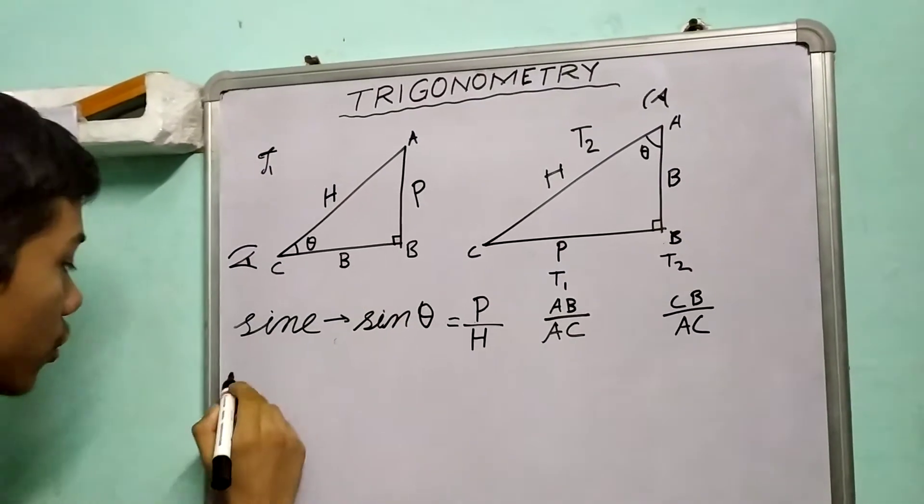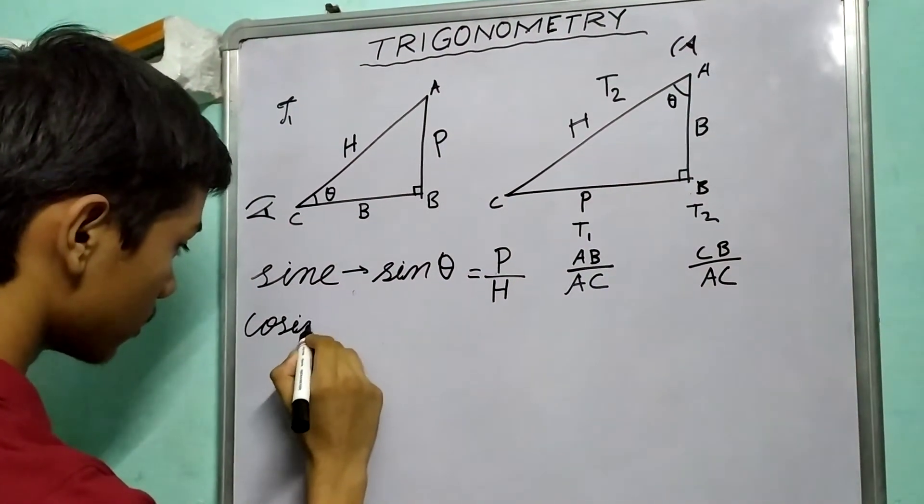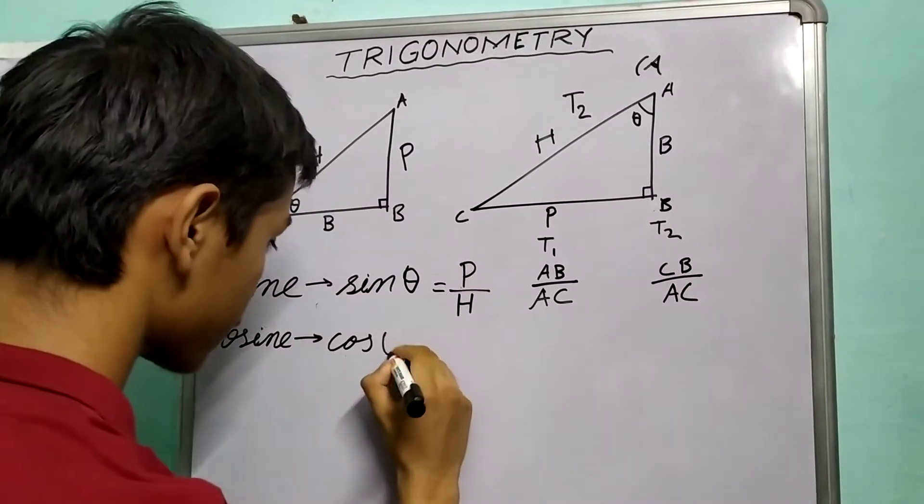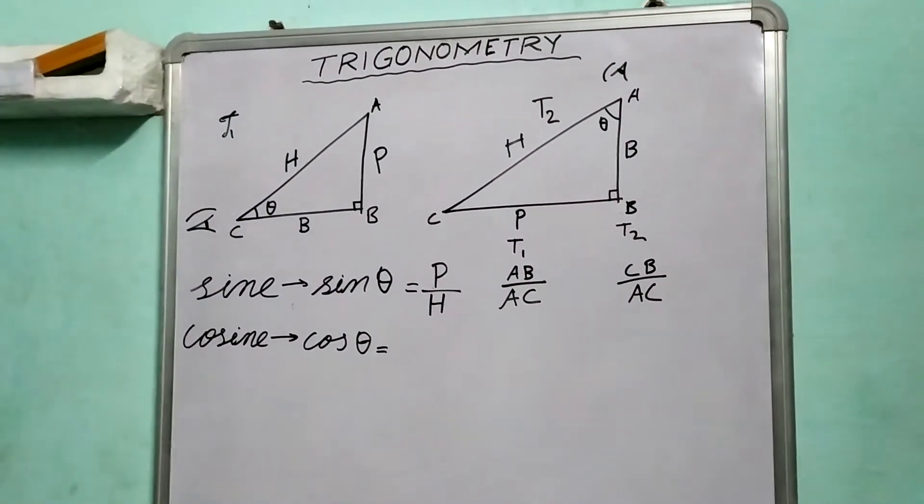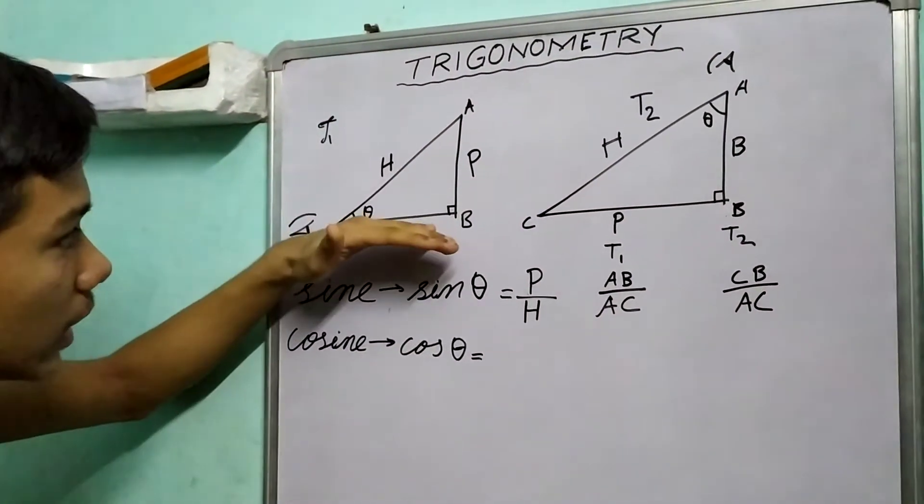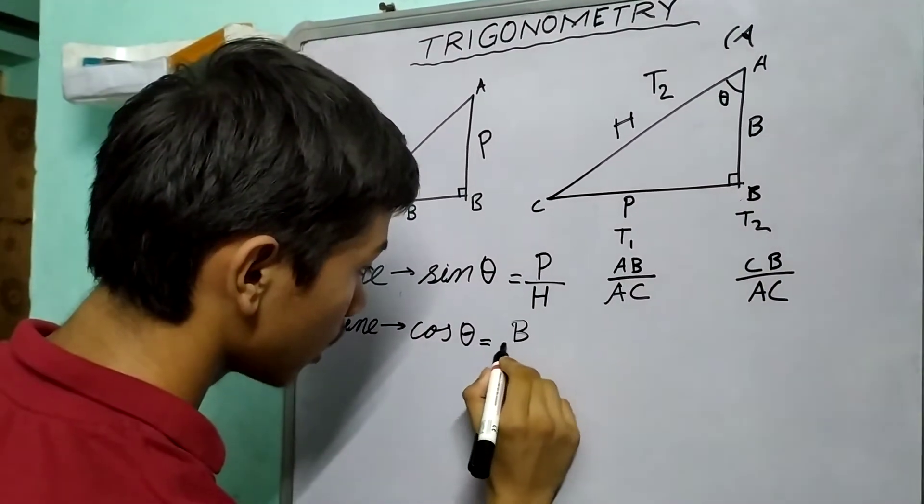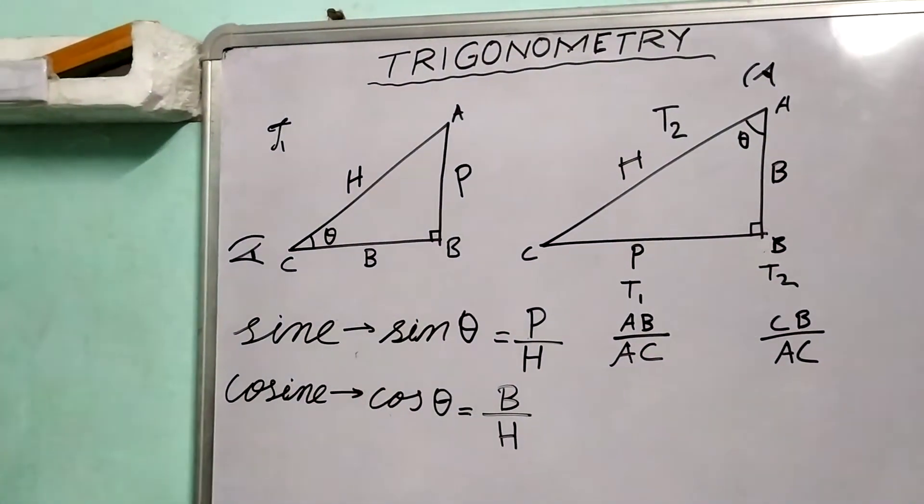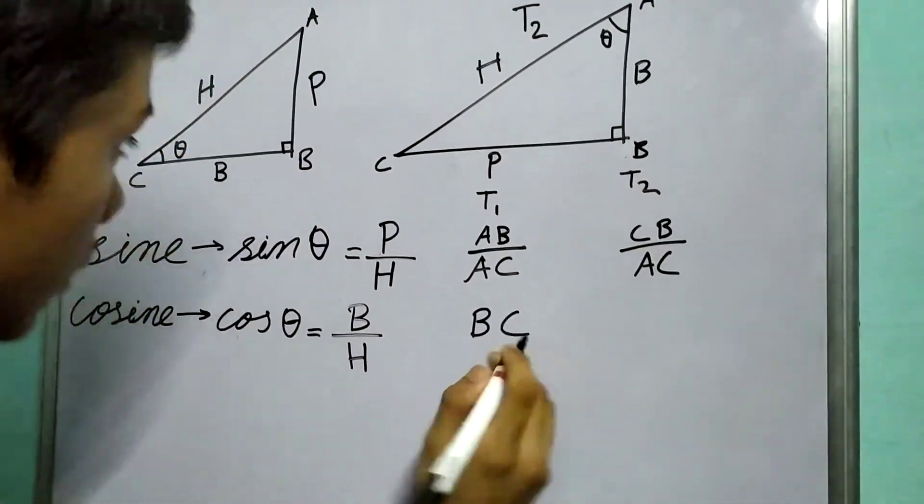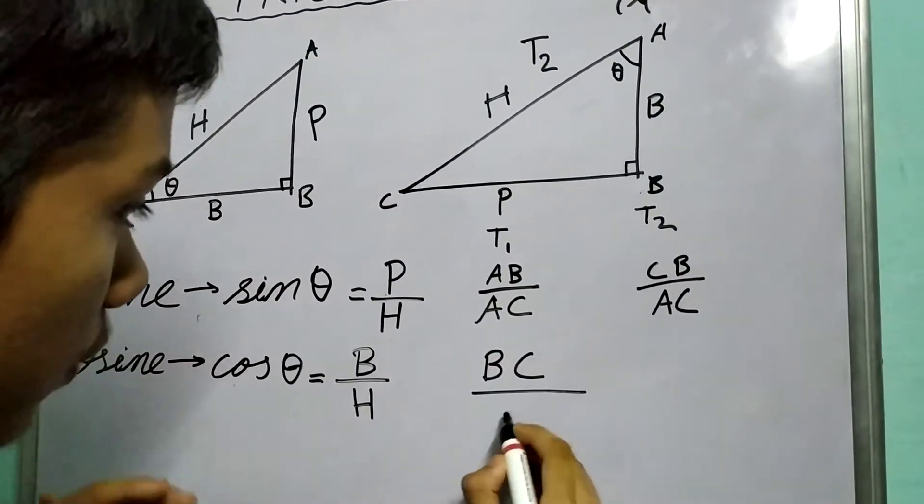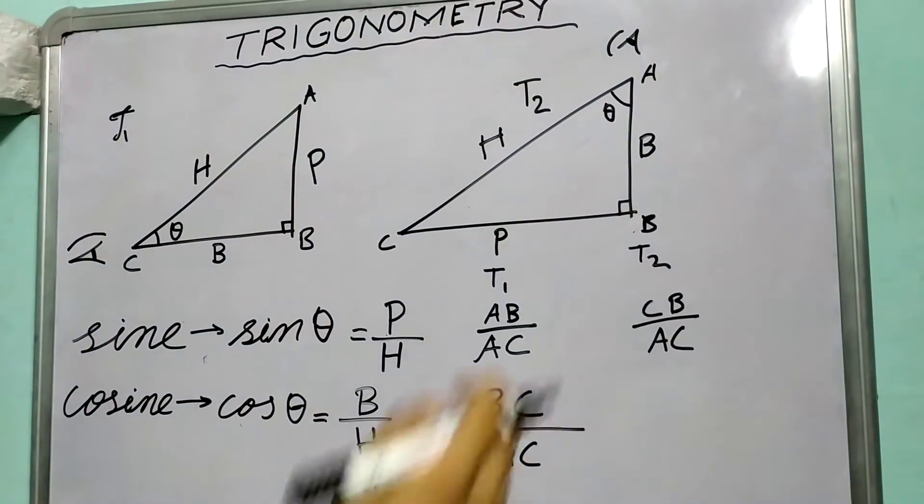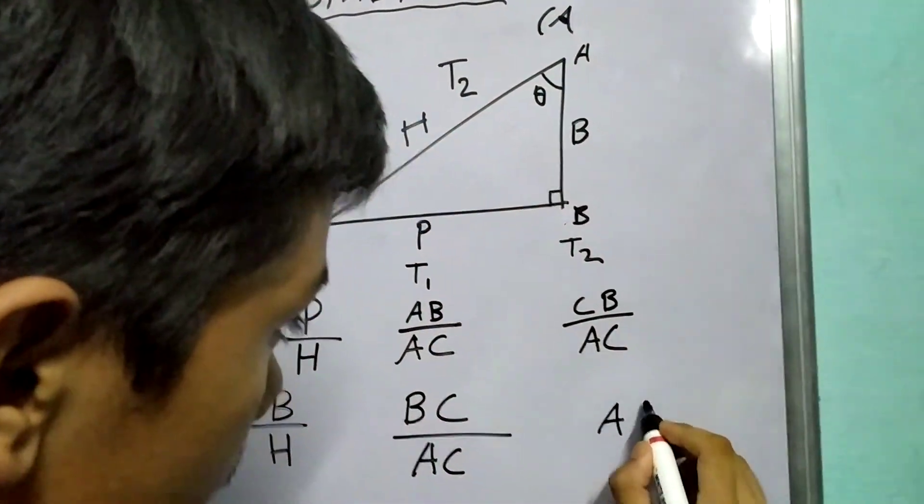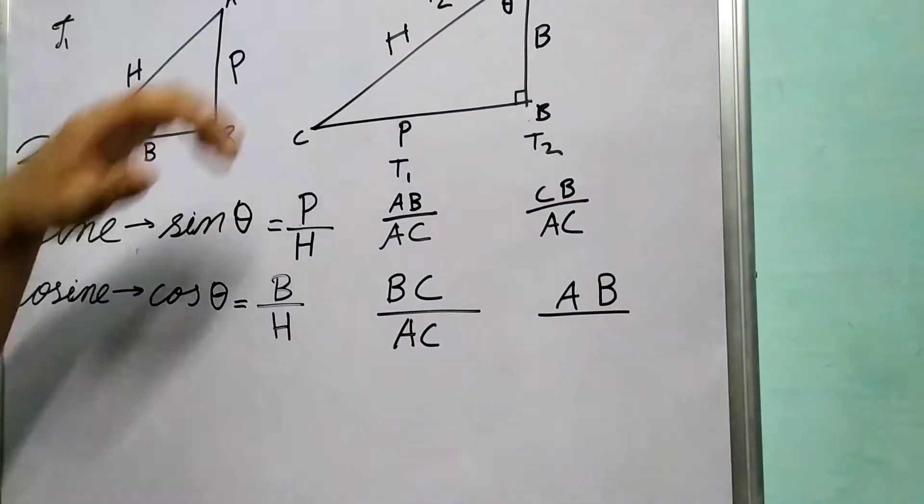Our second trigonometric ratio is cosine, written as cos in short, and pronounced as cos. Cos theta is defined to be the ratio of base to the hypotenuse, so B upon H. So in triangle T1, in this case of theta, it will be BC, this is the base, upon hypotenuse which is AC. And as for this triangle, in this case theta is angle A, then the base will be AB upon the hypotenuse AC.